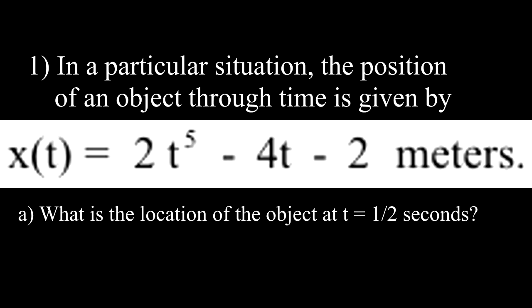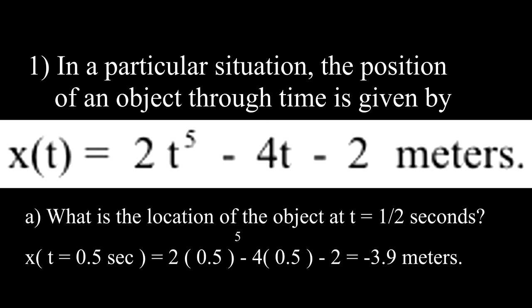Question A. What is the location of an object at t equal to 1 half seconds? In the equation for x(t), we set t equal to 1 half, so we have 2 times 1 half to the 5th power minus 4 times 1 half minus 2 equals minus 3.9 meters.